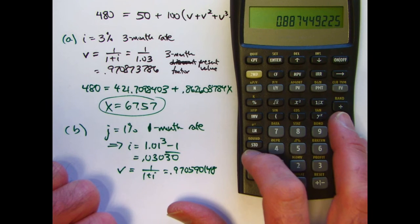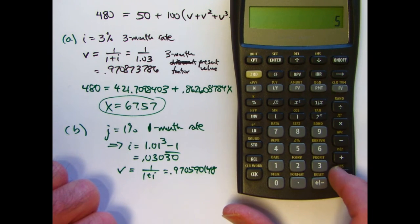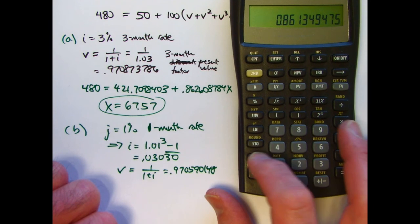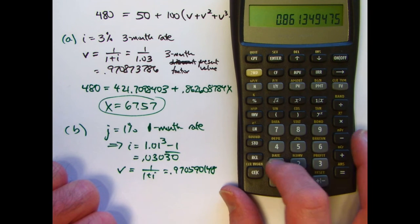I will need to raise it to the fifth power as well, as we saw before. Store that in register 5. Now I add up V plus V squared plus V cubed plus V to the fourth, so recall 1.